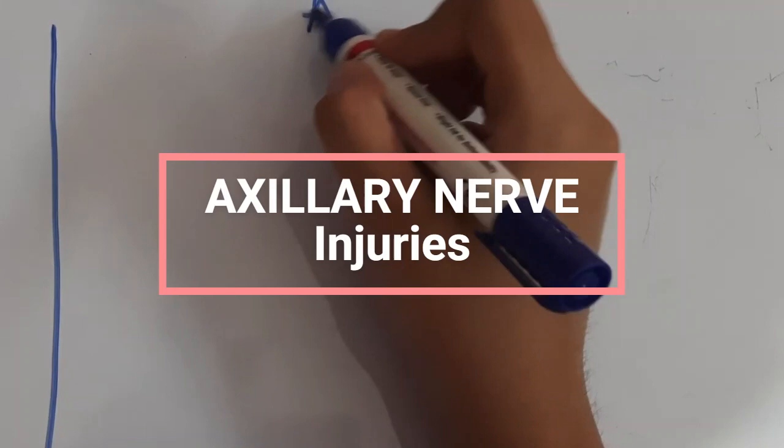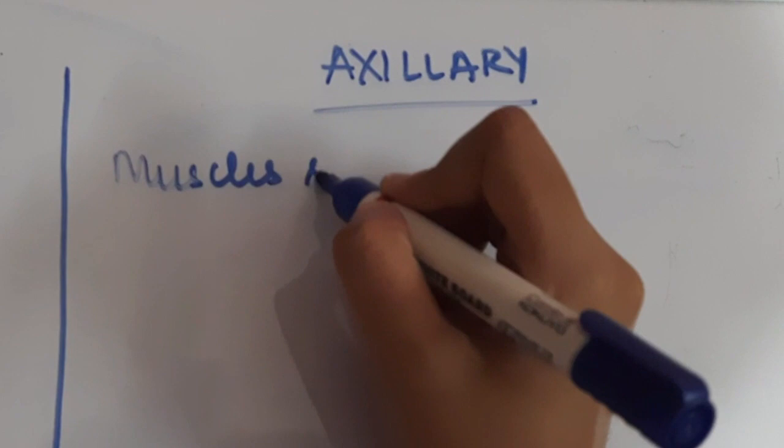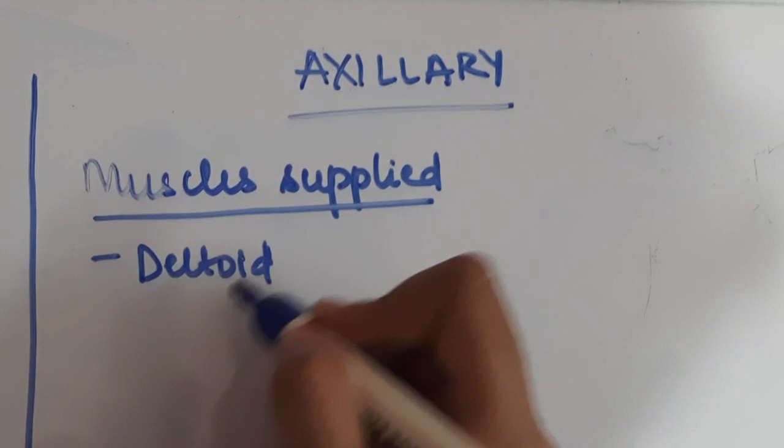Hello everyone, let us look at a summary of what happens when the axillary nerve is injured. The muscles supplied by the axillary nerve include the deltoid muscle along with the teres minor muscle.